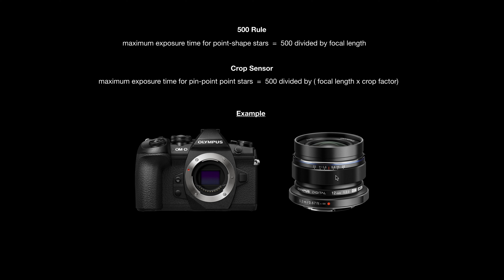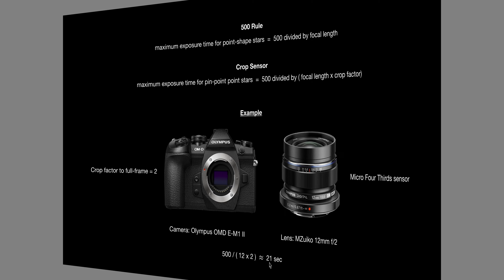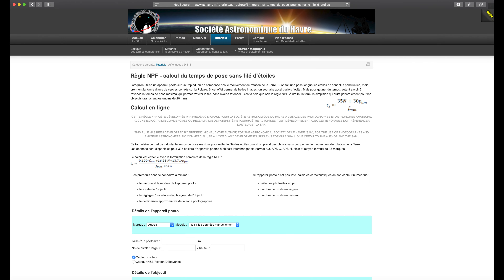Let's look at an example. A very common setup for astrophotography is the Olympus OM-D E-M1 Mark II with a 12mm MZuiko lens. The crop factor to full-frame is 2, so the formula is 500 ÷ (12 × 2) = 500 ÷ 24 ≈ 21 seconds. According to the 500 rule, an exposure time of around 21 seconds should give pinpoint sharp stars. However, this rule isn't very precise — it doesn't account for many other important factors.